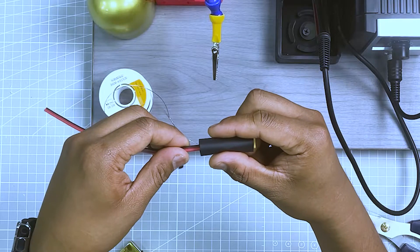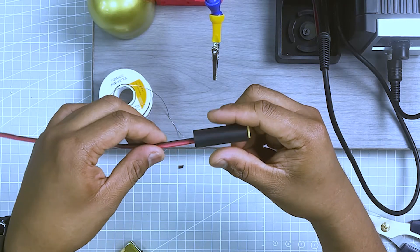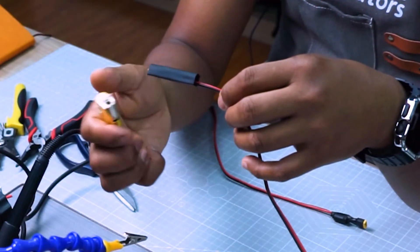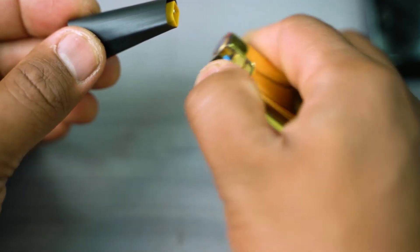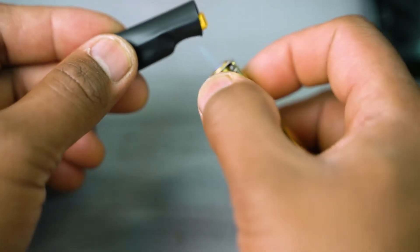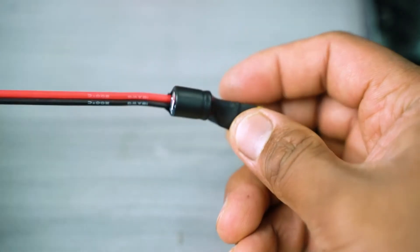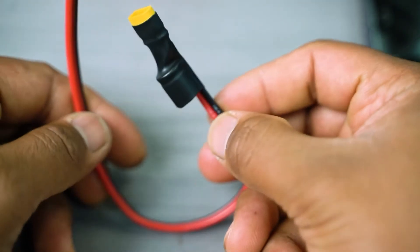Gently insert the shrinkable tube on the socket, covering the capacitor and the soldering joints. Then, shrink the tube using lighter or a torch. Finally, our XT-30 power cord is finished.